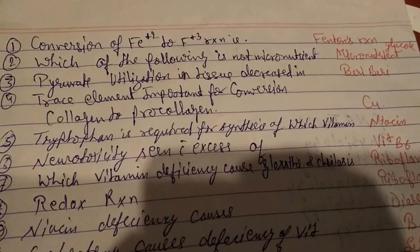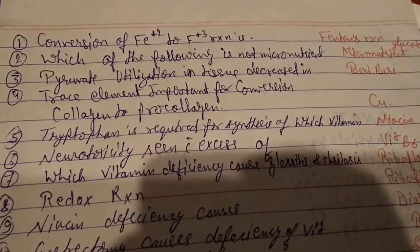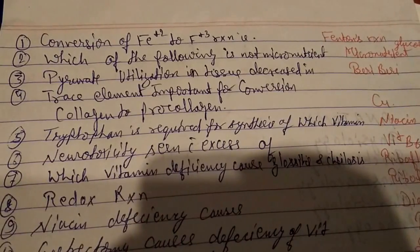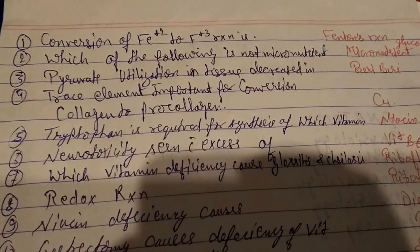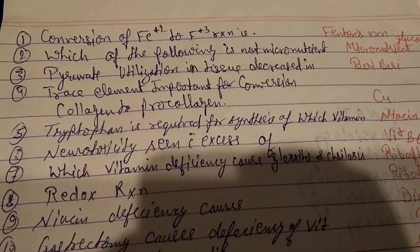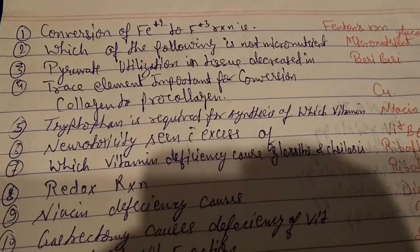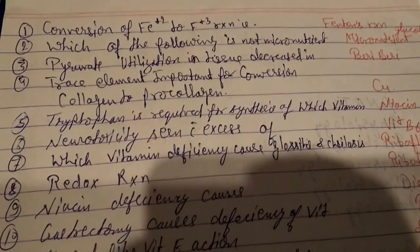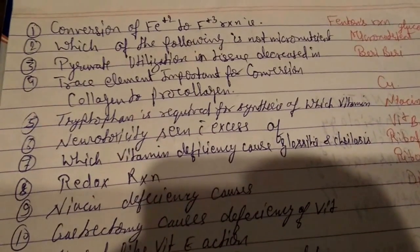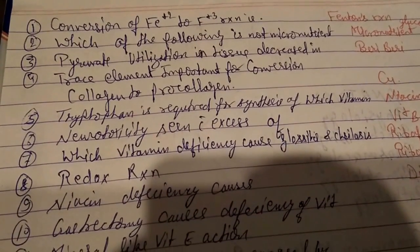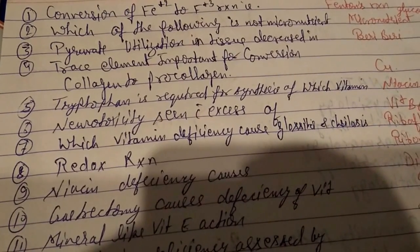Question number three: pyruvate utilization in tissue is decreased in beriberi. Question number four: the trace element important for conversion of collagen to procollagen is copper.